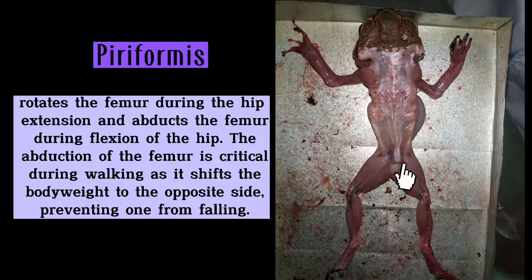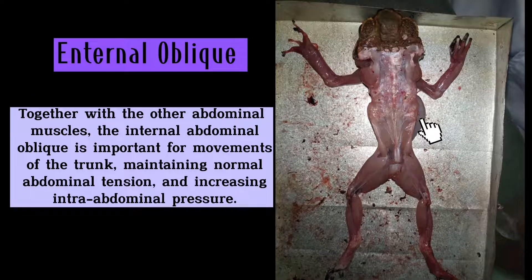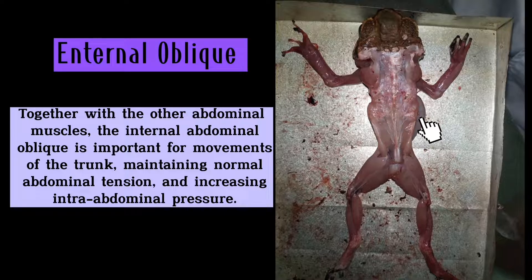The piriformis muscle rotates the femur during hip extension and abducts the femur during flexion of the hip. The abduction of the femur is critical during walking as it shifts the body weight to the opposite side, preventing falling. Together with the other abdominal muscles, the internal abdominal oblique is important for movements of the trunk, maintaining normal abdominal tension and increasing intra-abdominal pressure. The latissimus dorsi muscle retracts the humerus and thus propels the body forward.